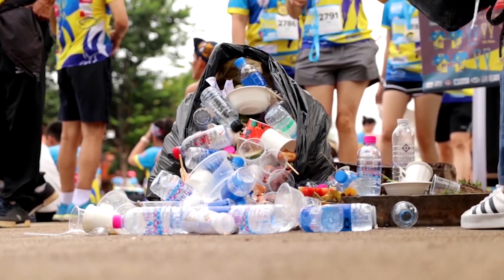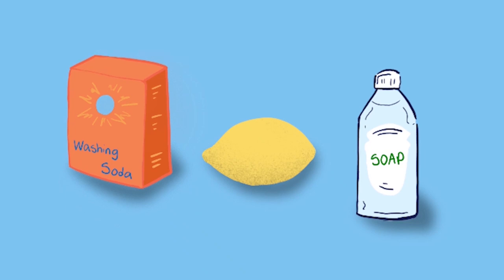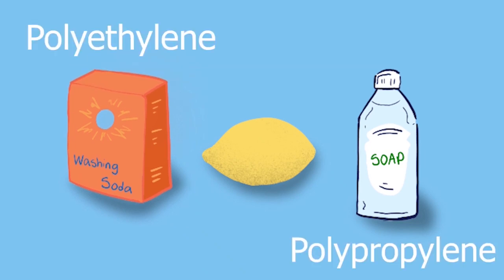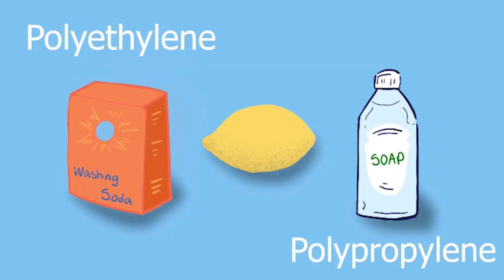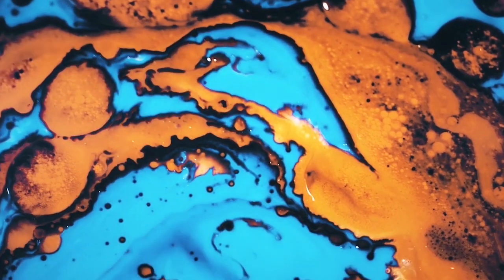For example, if we take a detergent jug, its body is made up of polyethylene and its cap is made up of polypropylene. If we melt those down and try to make a bottle out of that, it would not be durable. The bottle will crack down on squeezing.